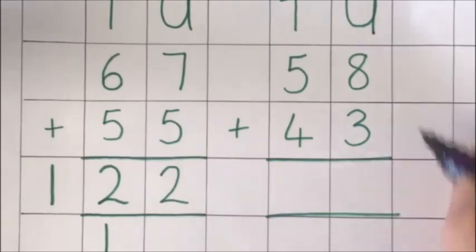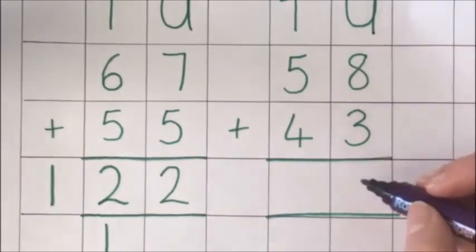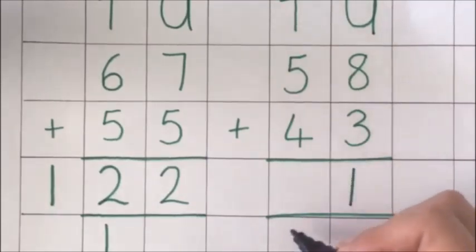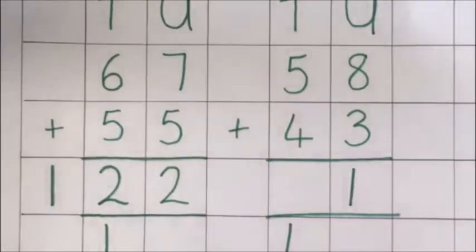So add the units first. 8 and 3 is 11. Put the 1 there and the 1 ten there. So there's my 11, 1 ten and 1 unit.